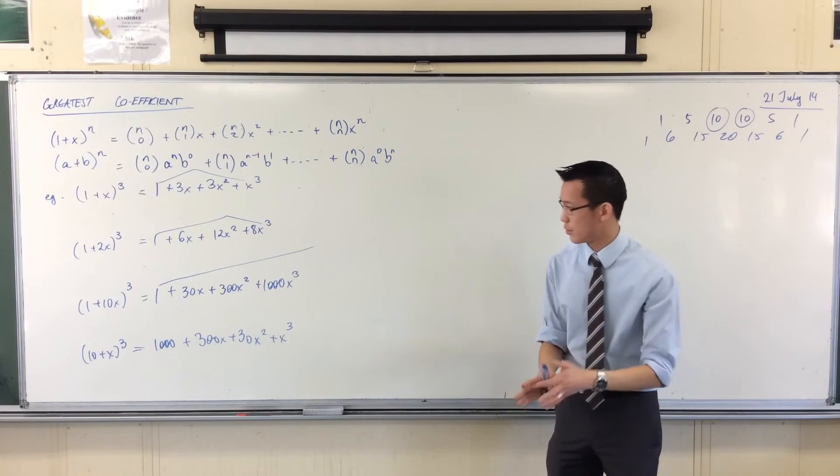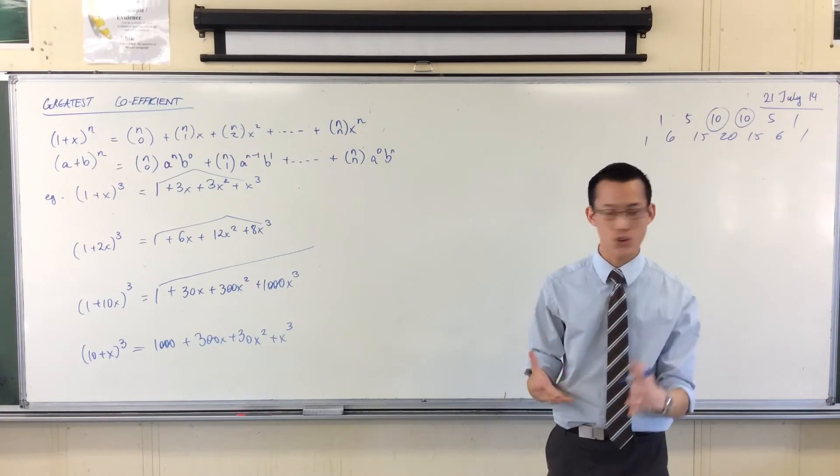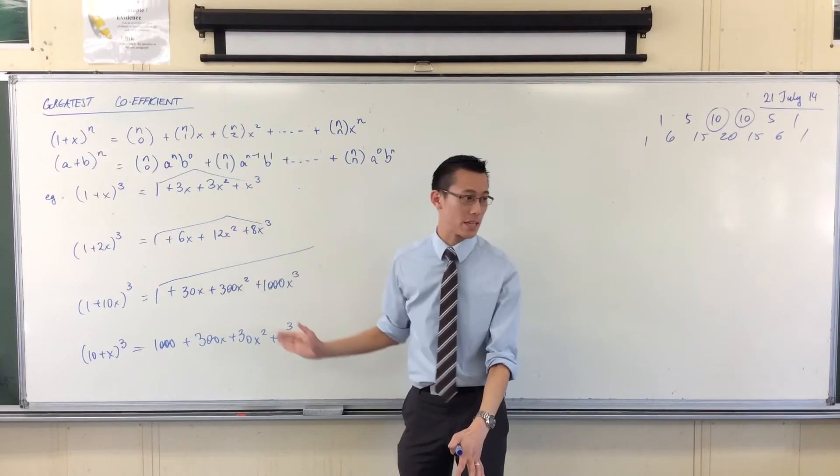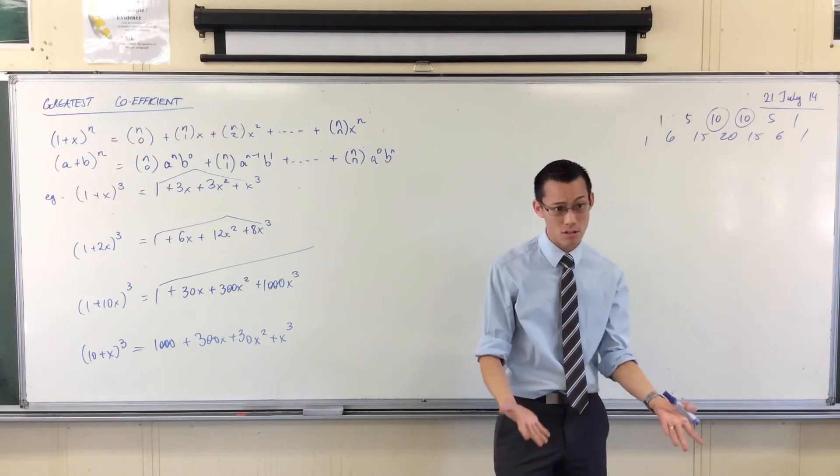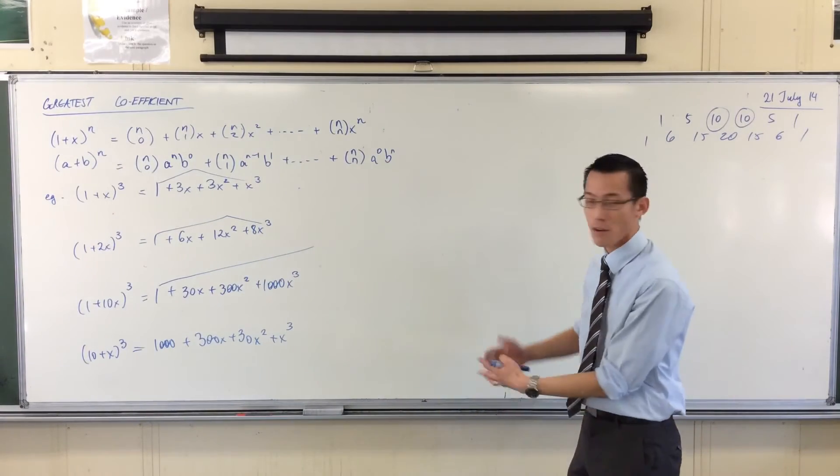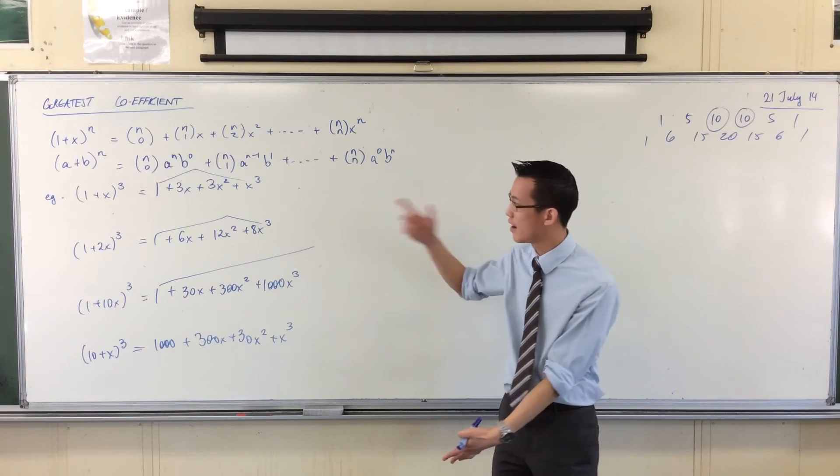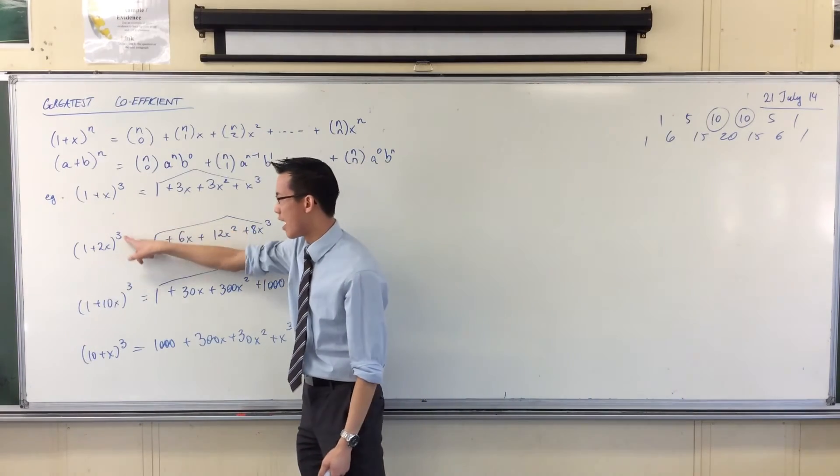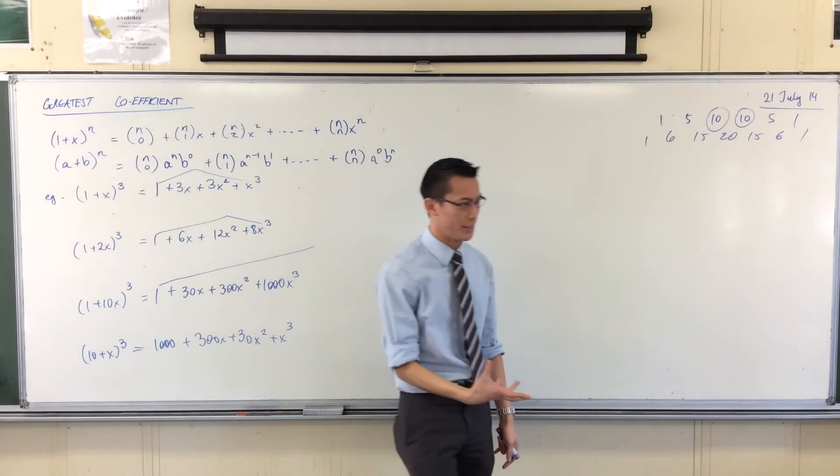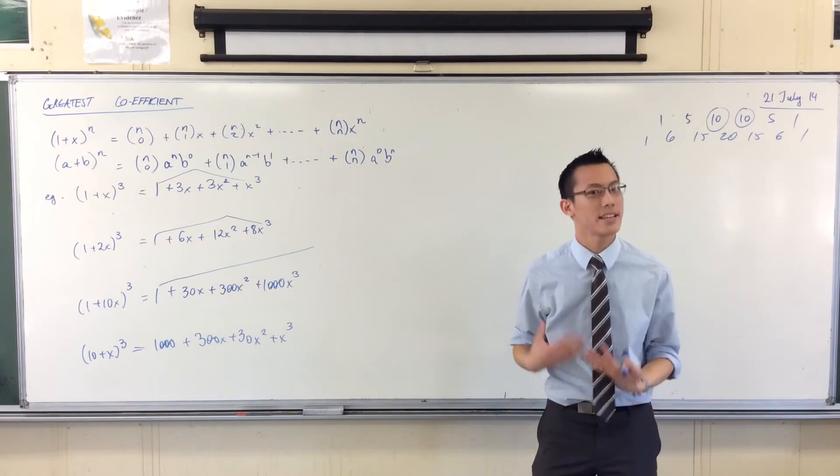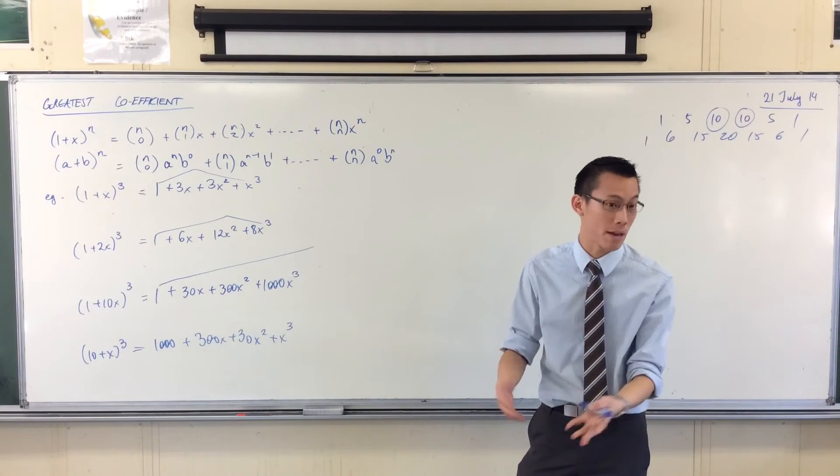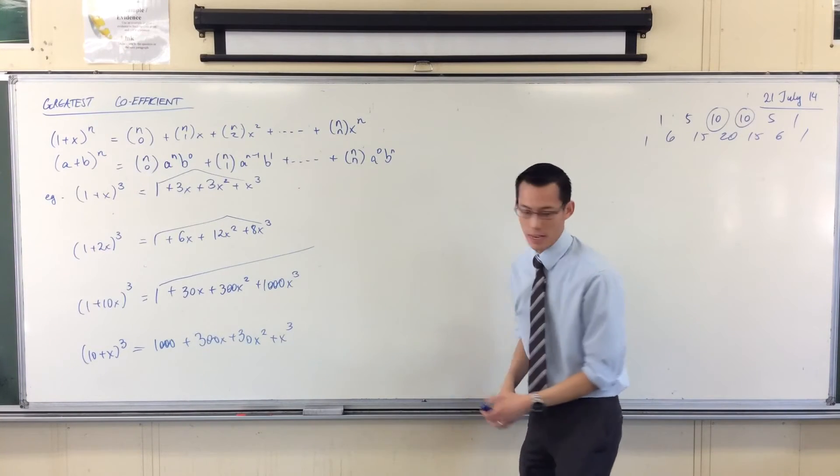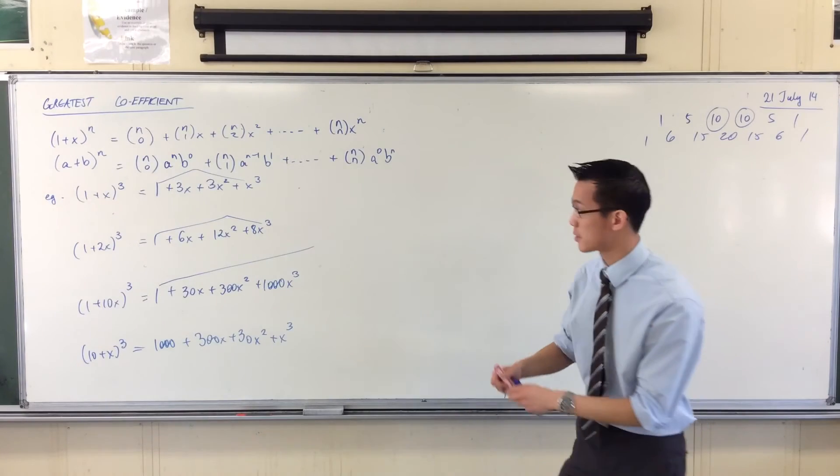Now, what I'm interested in doing is trying to get a general approach toward finding which one is the biggest one. In these examples, because they've only each got four terms, I can just do them, and the numbers are nice and easy. But if these powers are high, and if these terms in here are awkward, it becomes increasingly difficult to just write them all out. We want a more sophisticated, efficient method of doing this.